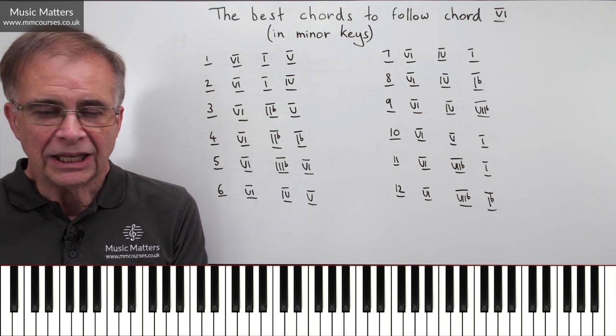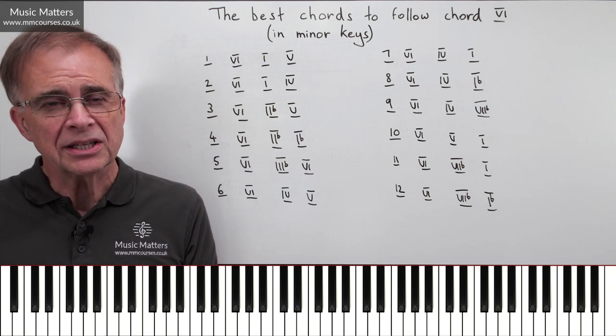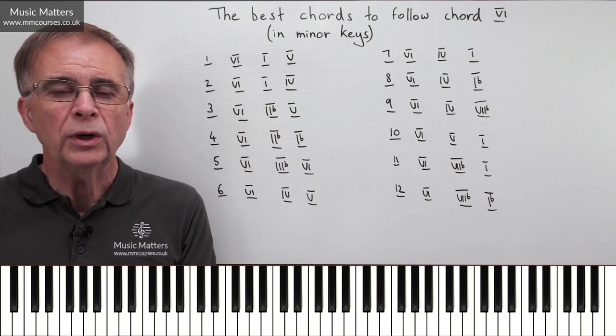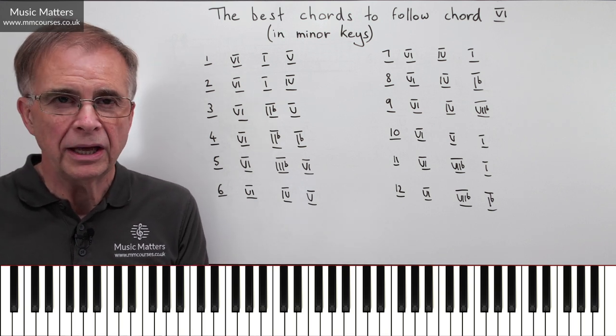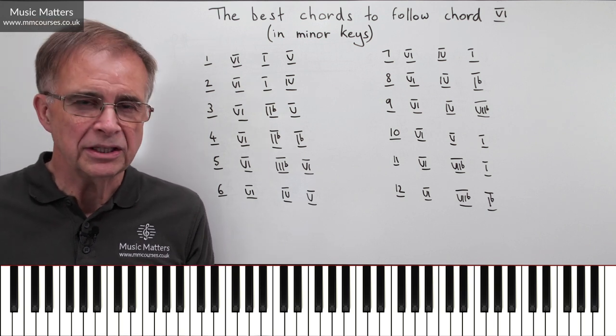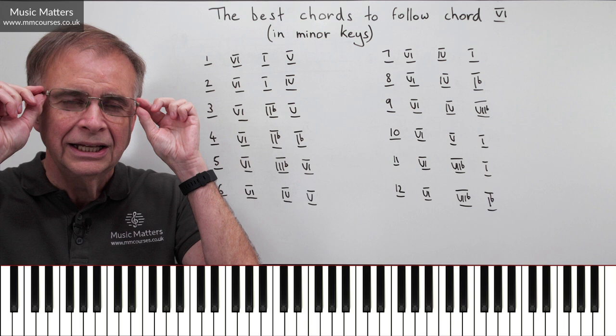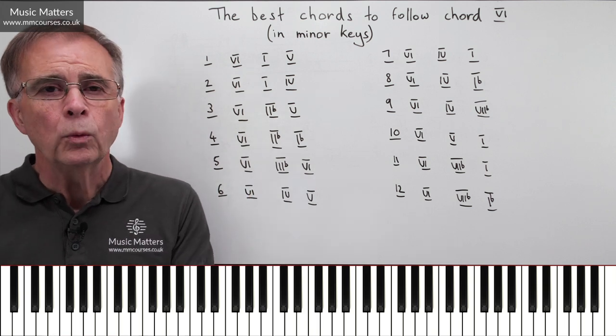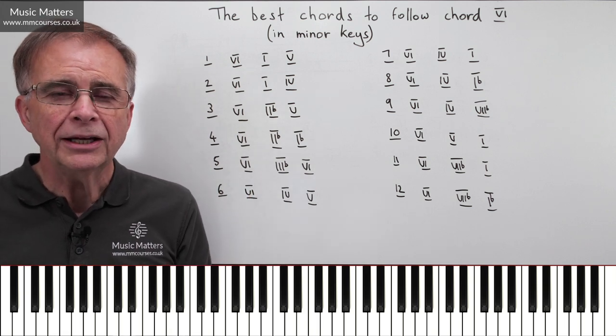Now, a couple of things just before we get going with all this. The first thing is to say I'm assuming that we're working in the harmonic minor scale. Of course there's a melodic minor scale, there's a natural minor scale, there are modes, there are other possibilities. Why are we working in the harmonic minor scale?